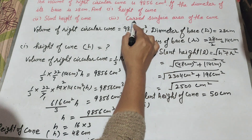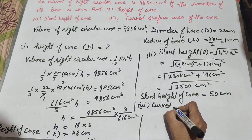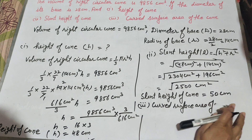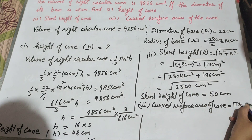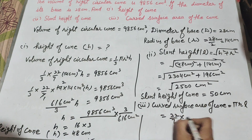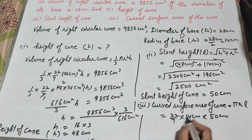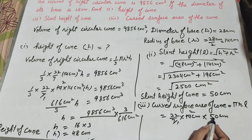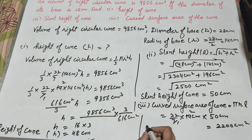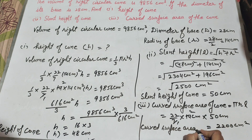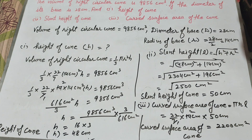Now we move to the third part: curved surface area of the cone. We know the formula to find curved surface area of a cone is equal to pi r l. Pi's value is 22 over 7, r is radius 14 centimeter, and l is slant height 50 centimeter. 7 and 14 are cancelled on the table of 7. So 22 multiplied by 2 is 44, and 44 multiplied by 50 is 2200 centimeter square. Curved surface area of cone equals 2200 centimeter square.